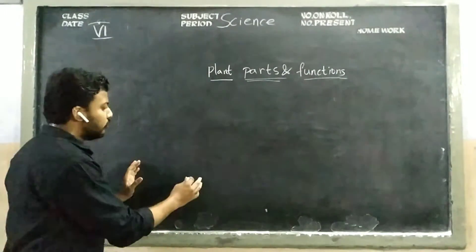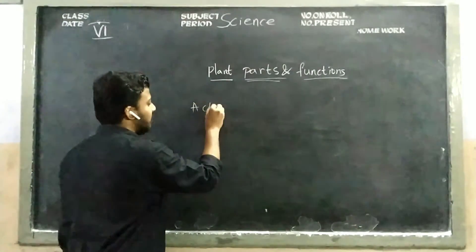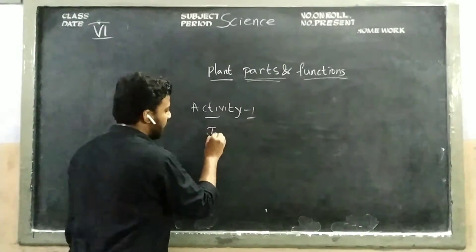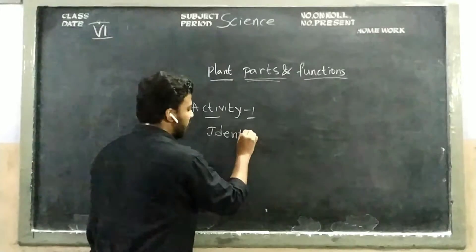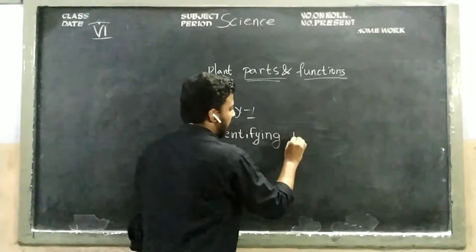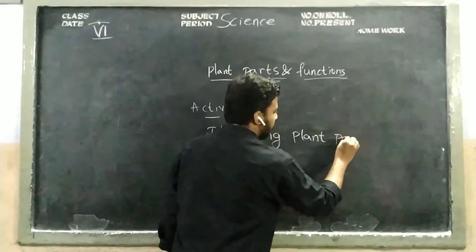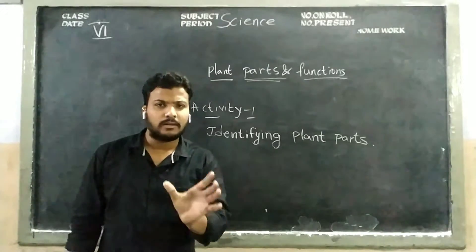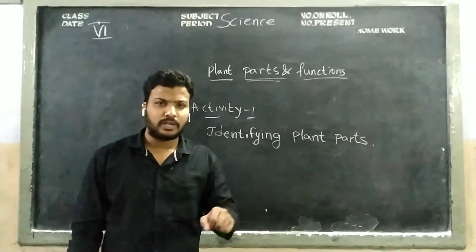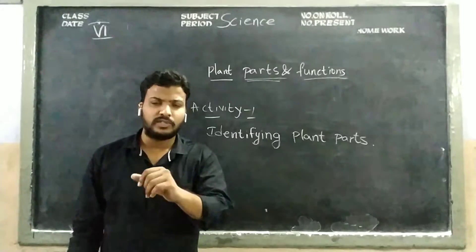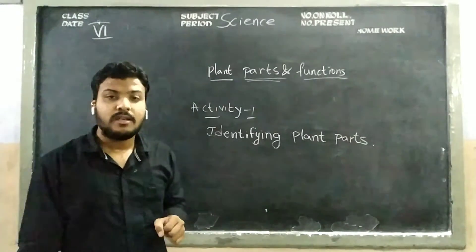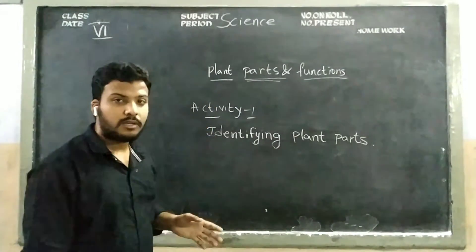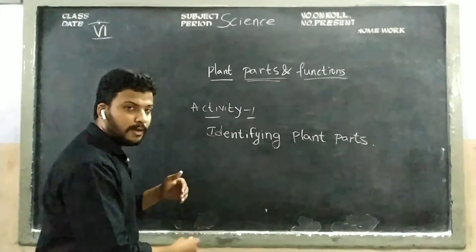Right now we will do an activity. That is Activity 1: Identifying plant parts. This is the activity for you — you collect 4 or 5 plants near your surroundings or your home. Then observe each and every plant to see whether it contains all the parts which I am going to write here.